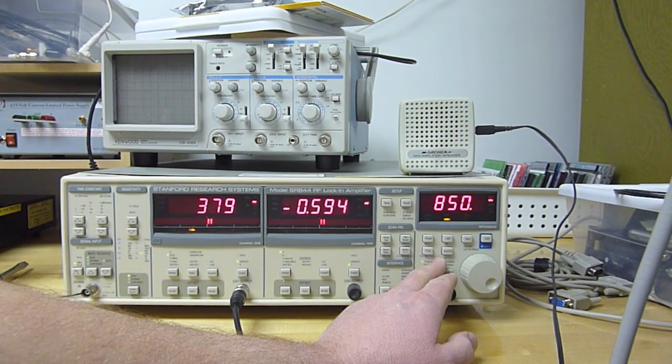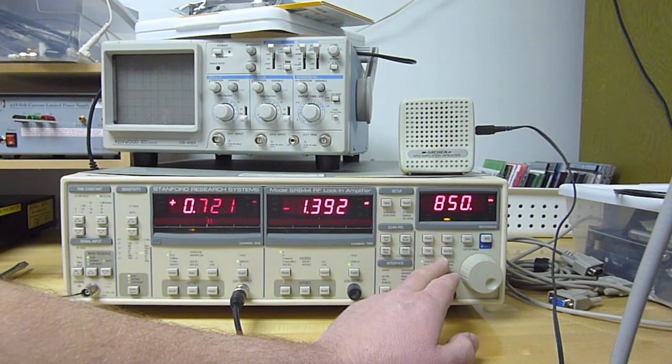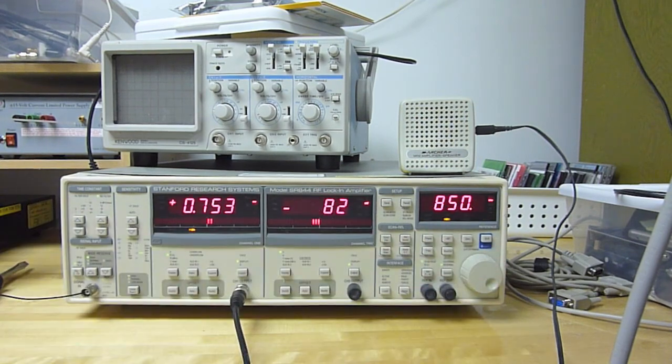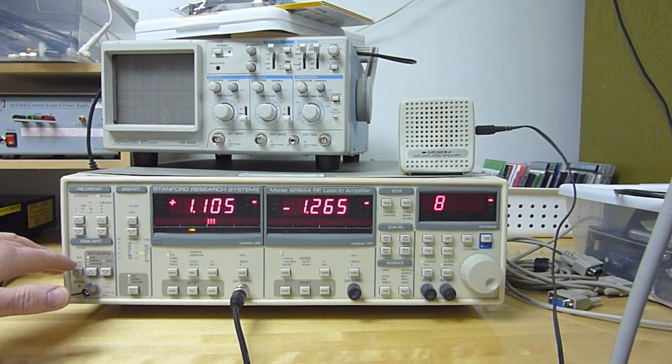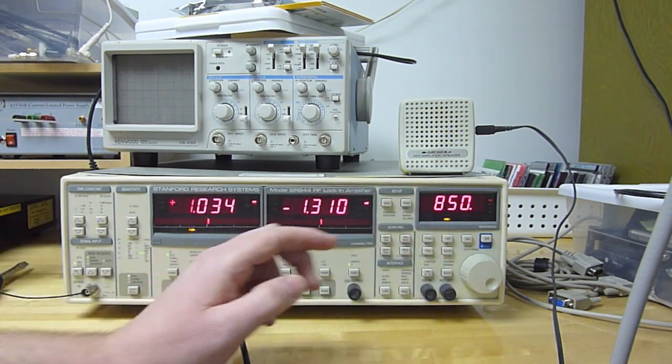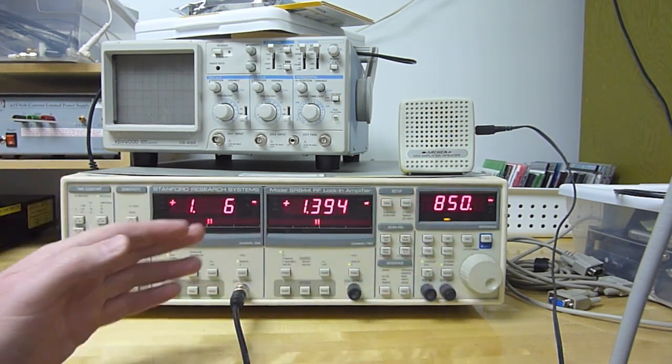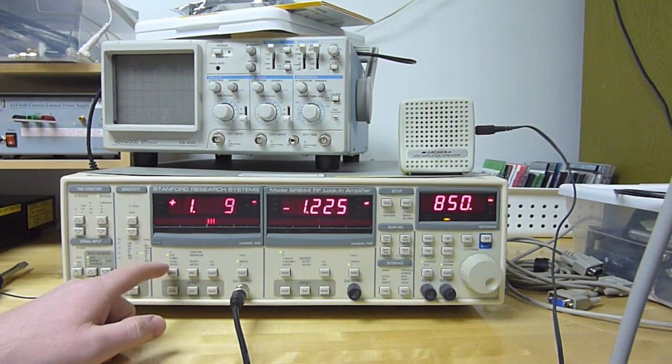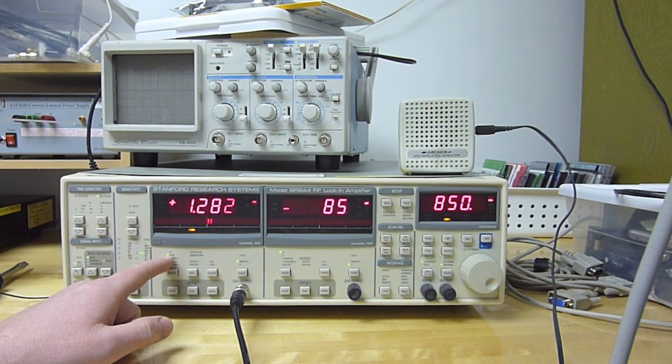What we're going to do here is use the local oscillator mixed with the input from a scrap of wire going into the input, which is set for high impedance, and we're going to mix 850 kilohertz down to DC and take the magnitude of the complex signal and send that into my handy dandy Archer amplified speaker.